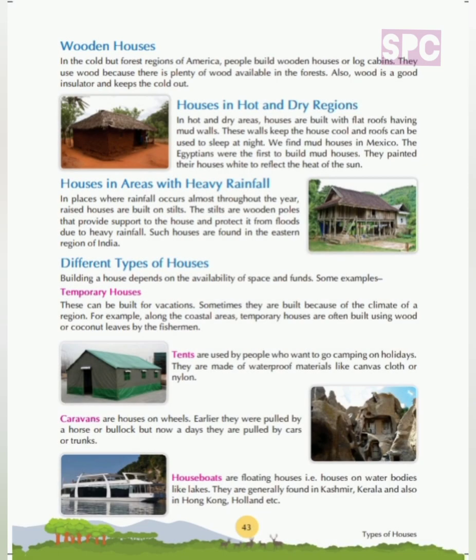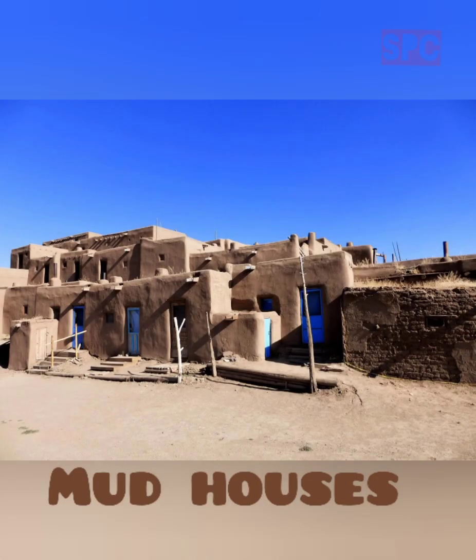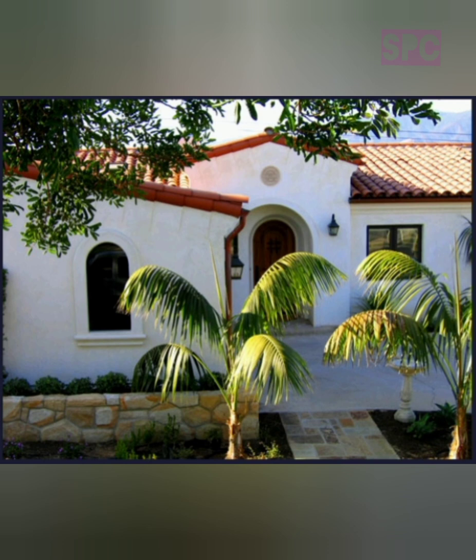In hot and dry areas, houses are built with flat roofs having mud walls. These walls keep the house cool and roofs can be used to sleep at night. We find mud houses in Mexico. The Egyptians were the first to build mud houses. They painted their houses white to reflect the heat of the sun. In hot and dry regions, mud having the cooling effect keeps the house cool, and painting the outer walls white means the color does not absorb heat radiation from the sun, helping to keep the house cool inside.